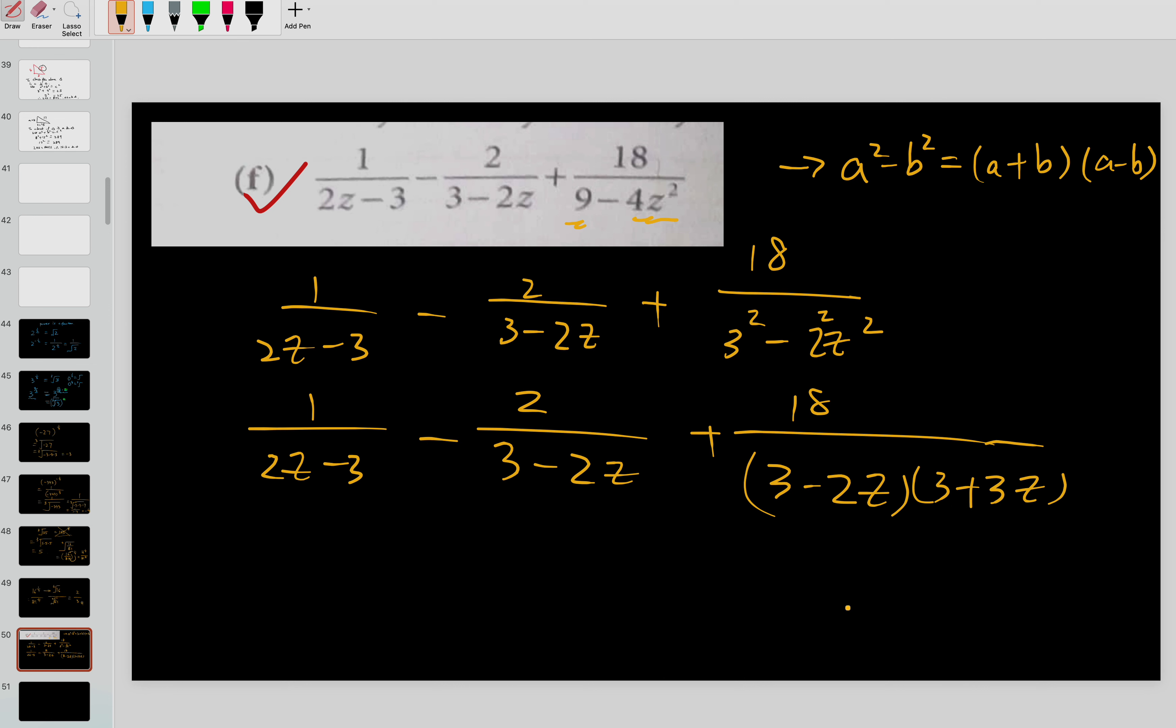Now you compare - this one compared to this one. You need to change this a little bit because they are different. How are they different? 2z minus 3, this is 3 minus 2z, so you need to switch position.